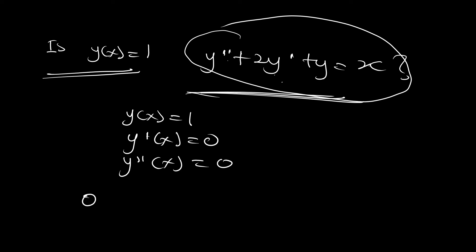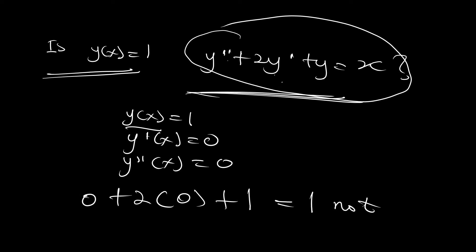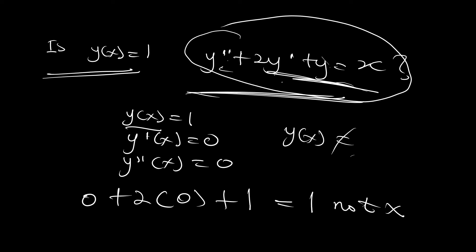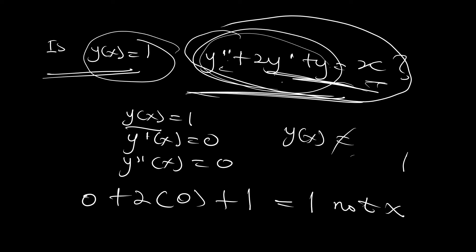Substituting into y'' + 2y' + y = x: zero plus two times zero plus one equals one, not x. Therefore, y of x equals 1 is not a solution to this differential equation. When we substituted the first and second derivatives, we didn't get x — we got one — so this is not a solution.